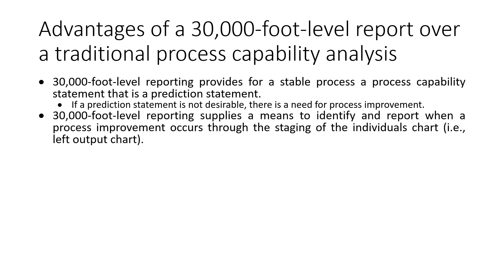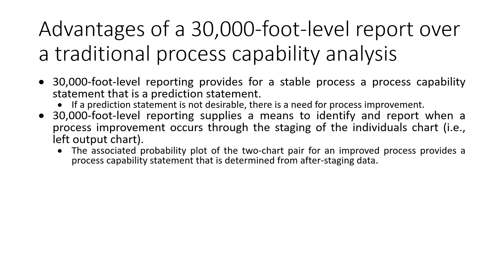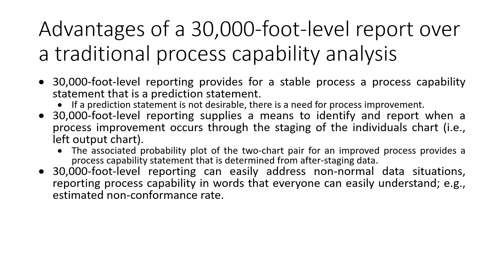If you did make an improvement in the process, the individuals chart should transition to an enhanced level of performance. The associated probability plot for the two-part chart pair for an improved process provides a capability statement determined from the after-staging data. 30,000-foot-level reporting can easily address non-normal situations in words that everyone can understand — for example, a non-conformance rate.